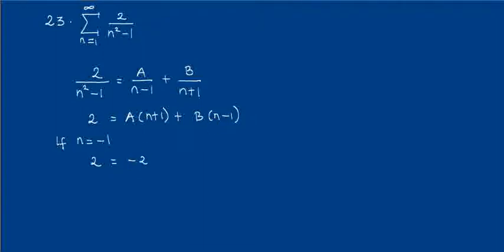So from this we conclude that B equals negative 1. Now if n equals 1, then 2 equals plug-in n equals 1 to this equation, so we have A times 1 plus 1, 2A, plus 0. Then from here we conclude that A is equal to 1.